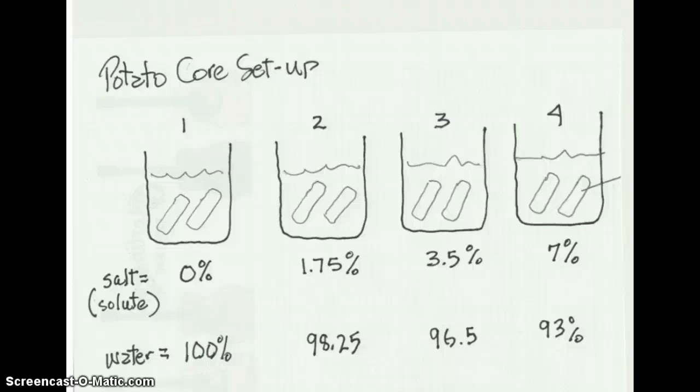If the cores shrink in size, then the cores themselves were hypotonic. Their environment was hypertonic. There was more water leaving the cores than was coming back in. Is that clear? I hope so.